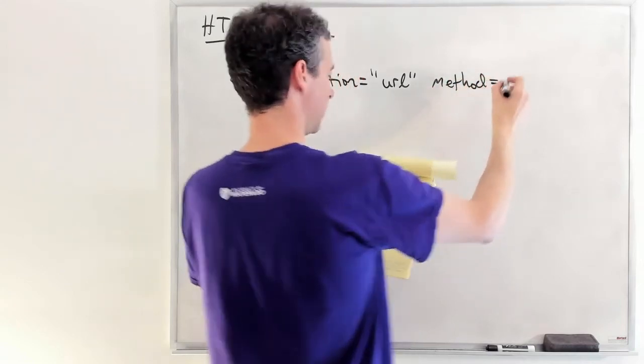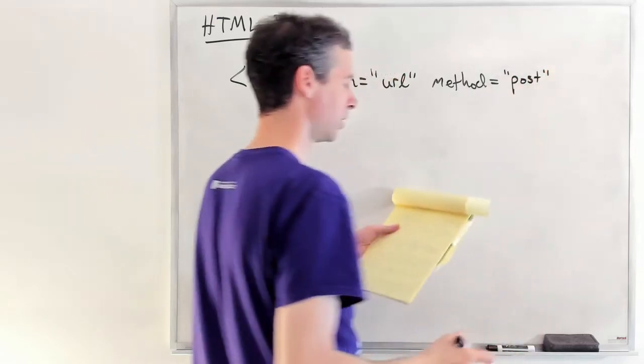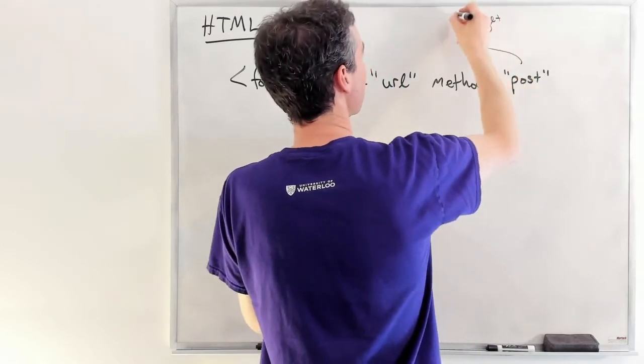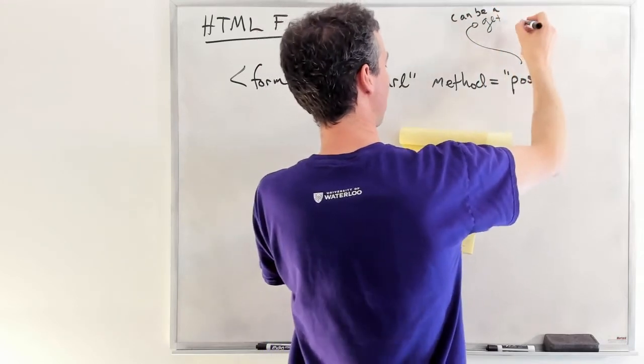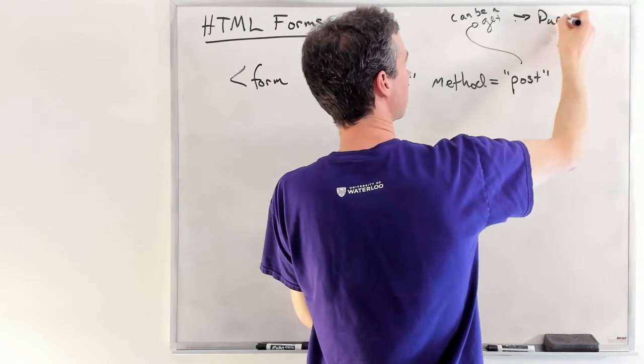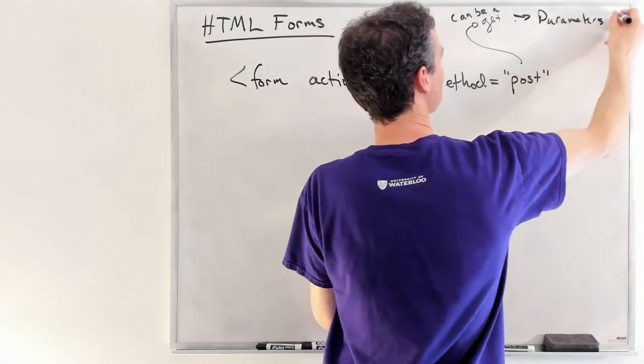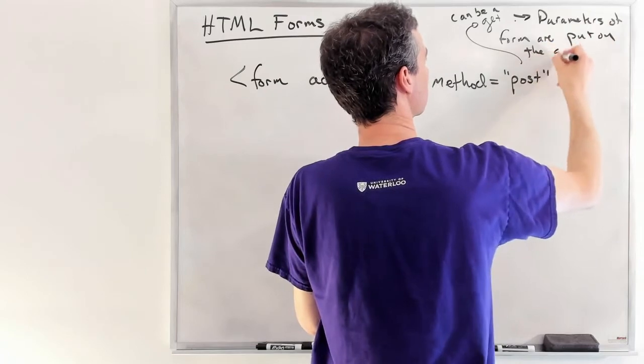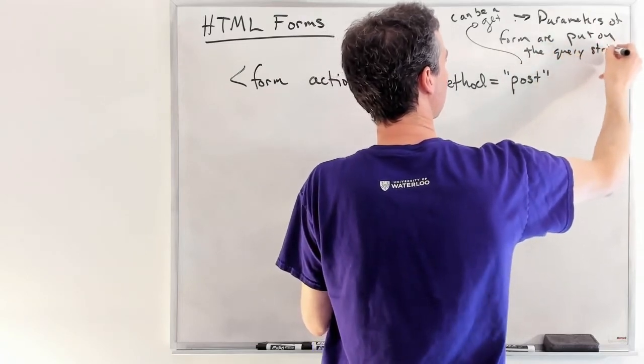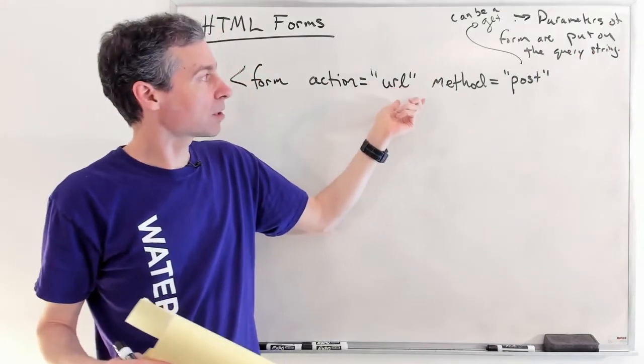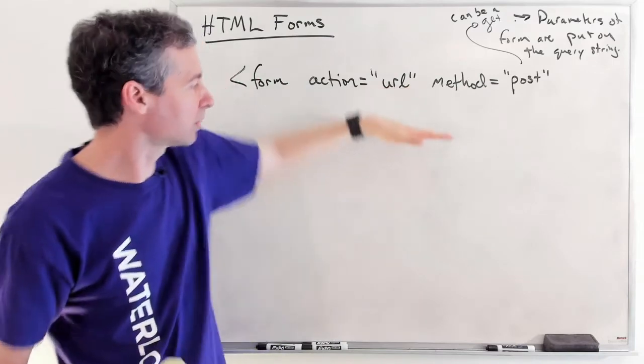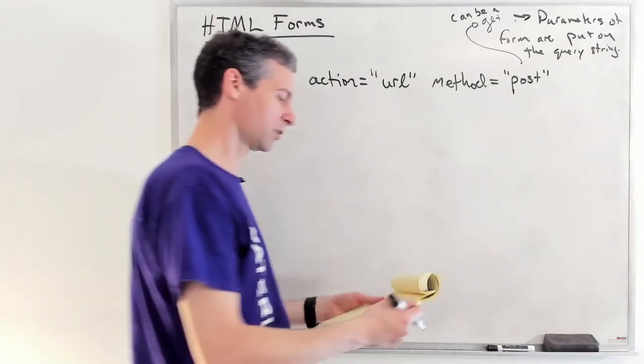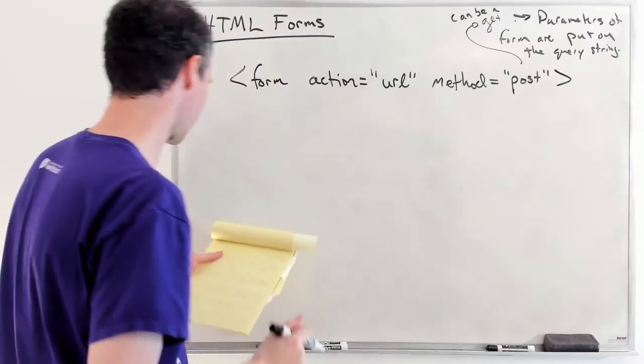But again, you aren't going to craft these URLs by hand and these forms by hand. Just know that this is what's behind the scenes, sort of behind the curtain. And then you specify a method. And so, for example, the most common method would be a POST. You can actually make this a GET.